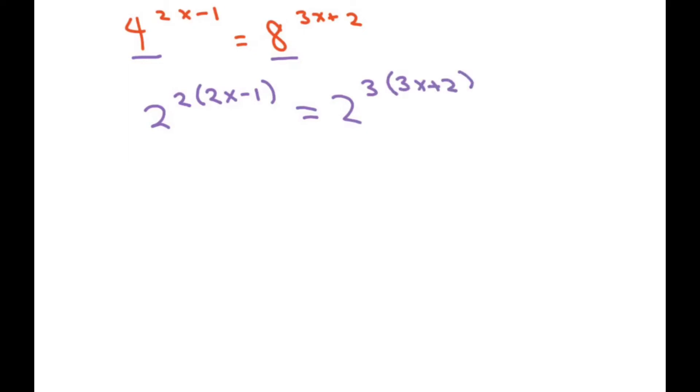Now that my bases are the same, we just have to deal with solving for x. And this would be 4x minus 2. Don't forget to distribute the 2 here. That's a common mistake. So you distribute both places. And you get 9x plus 6.